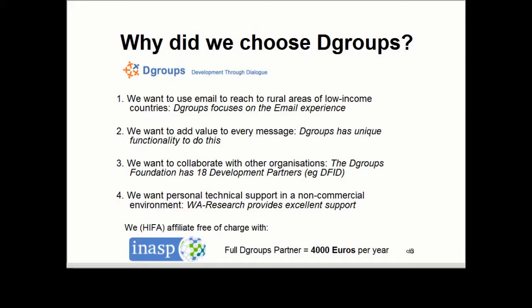We also chose dGroups because we wanted to collaborate with other organisations, and the dGroups Foundation has 18 development partners including DFID and many others. We want personal, high-quality technical support in a non-commercial environment — hats off to Damir, Sinanik, and WA Research for providing excellent technical support. HIPAA is affiliated with INASP, which is one of the main dGroups partners. There are 18 partners, each paying €4,000 per year, but organisations with less than €500,000 annual turnover can affiliate with full partners to have a group.